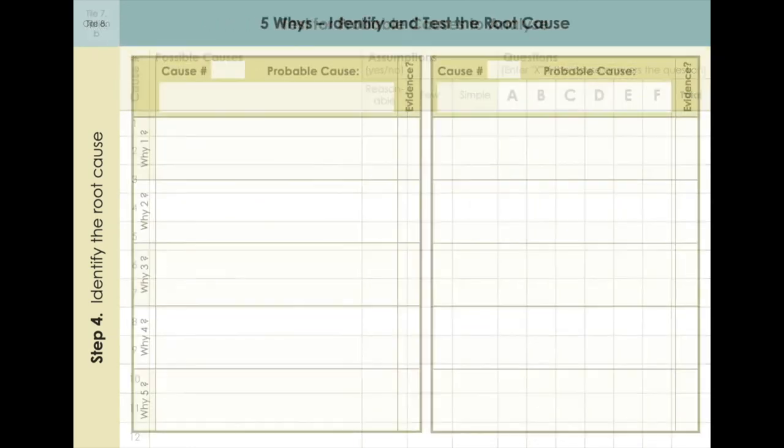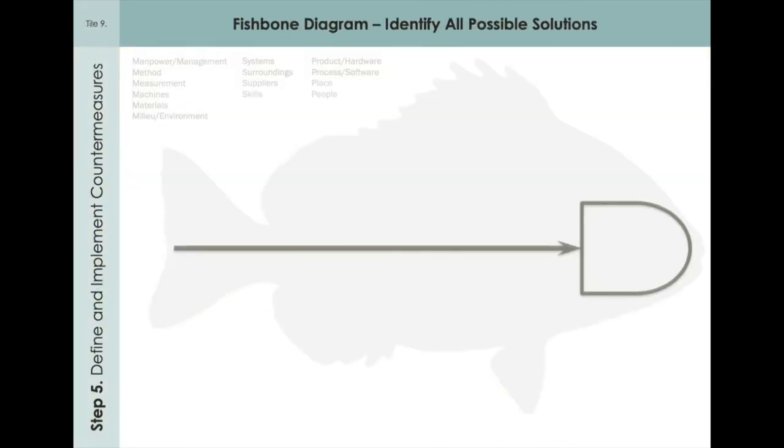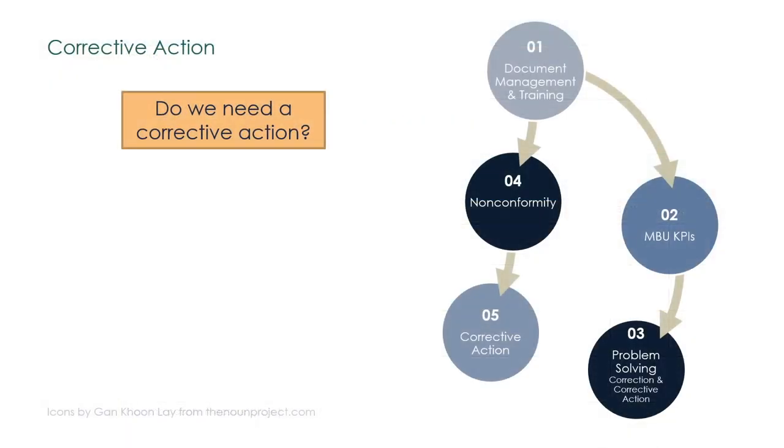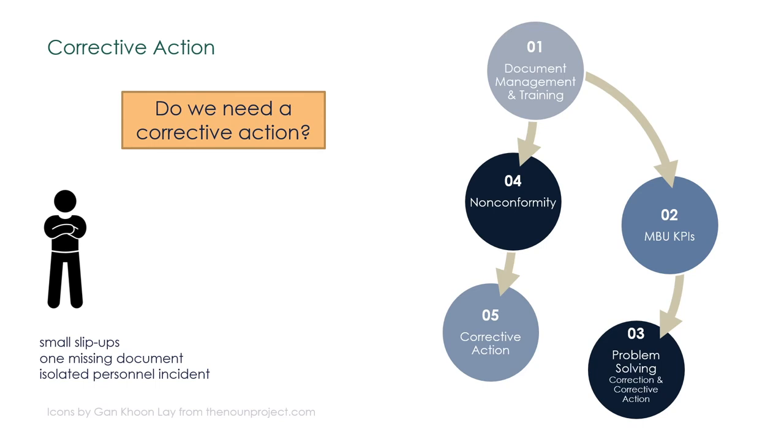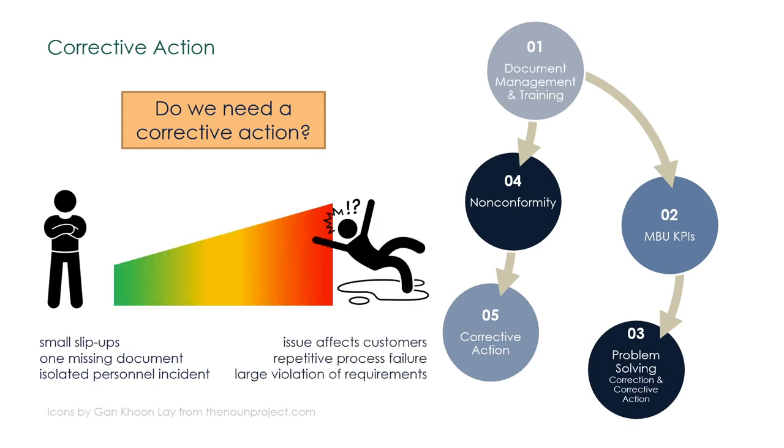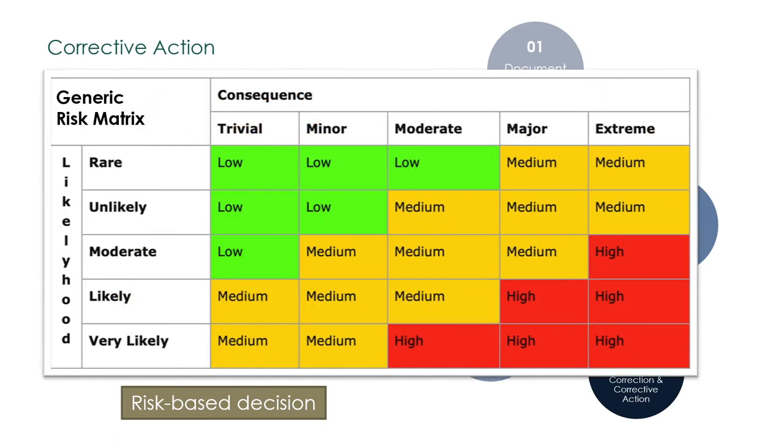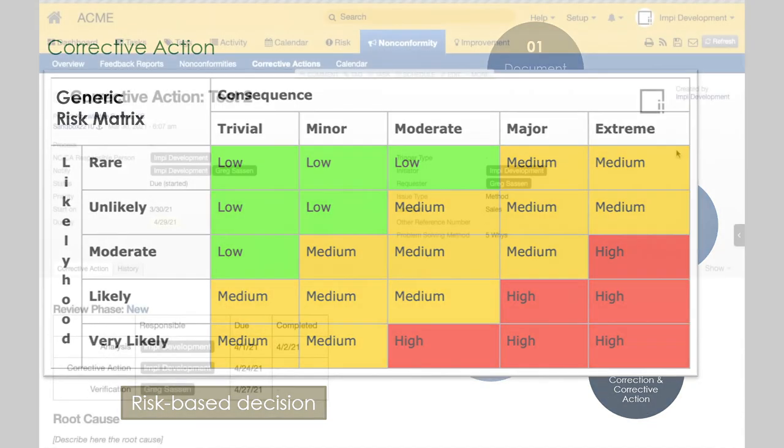How can we limit this effort so that we can focus on the problems that have serious impacts on people, customers, and the business in general? A single slip-up or one missing document shouldn't be treated the same as a repetitive process failure of a major safety risk. The decision to pursue a corrective action should be based on risk. The responsible leaders look at the likelihood of the non-conformity to reoccur and its consequence. Then they may motivate not to start the corrective action process.